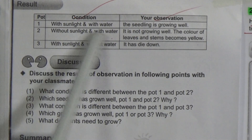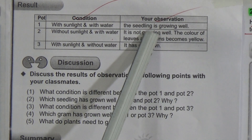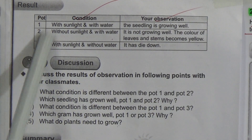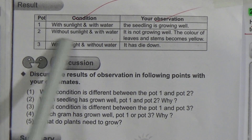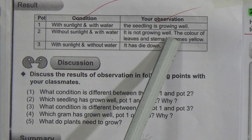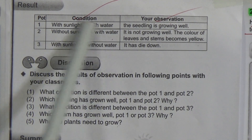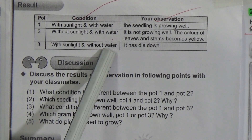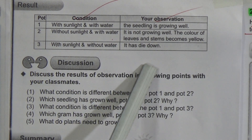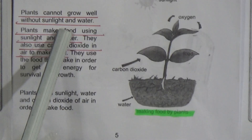Results: Condition - with sunlight and with water; observation - the seedling is growing well. Condition - without sunlight and with water; observation - it is not growing well, the color of leaves and stems becomes yellow. Condition - with sunlight and without water; observation - it has died down. Summary: Plants cannot grow well without sunlight and water.